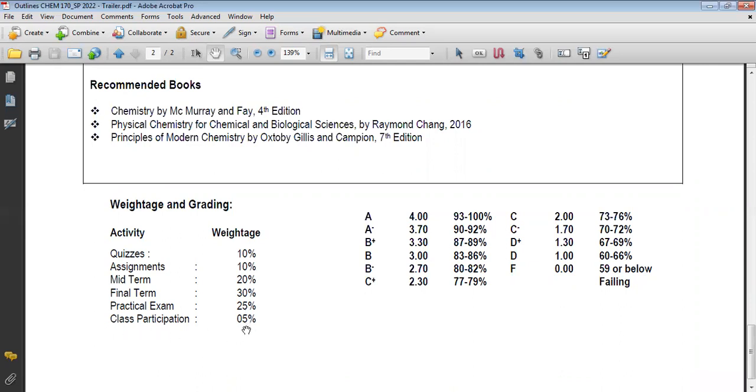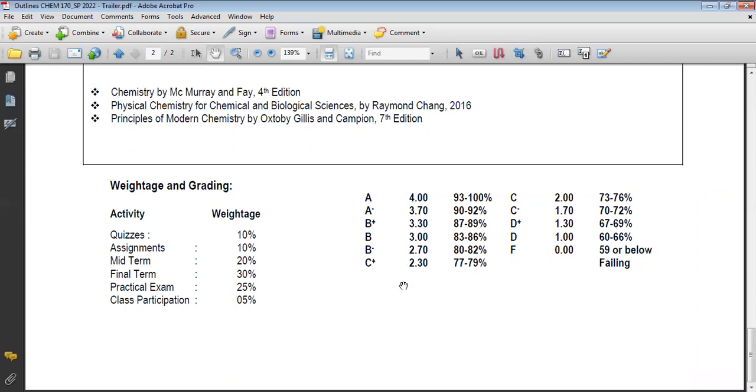You must remain active during the class. The grading, as per the rules and regulations of the university, are given here with different tiers. This is all about the course outline or the course description.